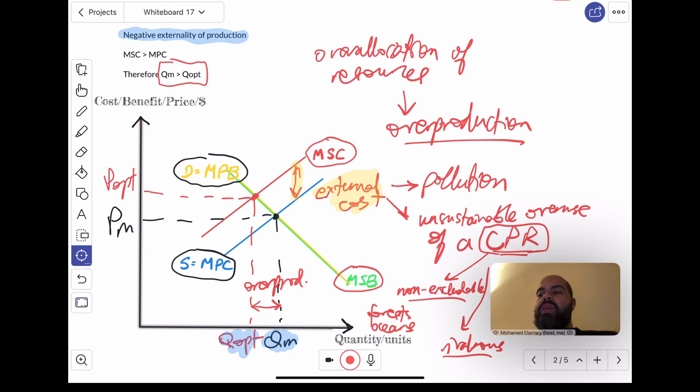Okay? So, this is, here I reviewed common pool resources, negative externalities of production, and how they lead to a situation of over-allocation of resources in the form of over-production.